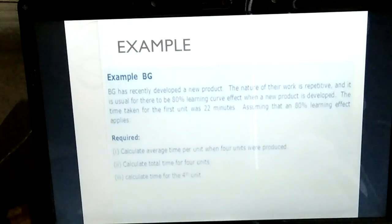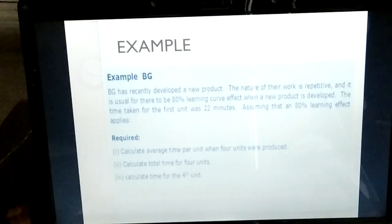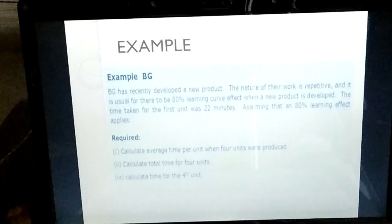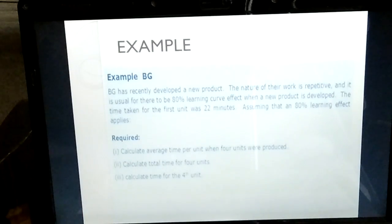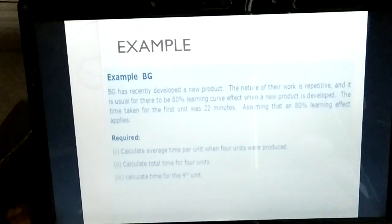Now let us see with the help of an example. BG has recently developed a new product. The nature of their work is repetitive and it is usual for there to be an 80% learning curve effect. The time taken for the first unit was 22 minutes. The requirements are: calculate the average time per unit when four units were produced; calculate the total time for four units; and calculate the time for the fourth unit specifically.